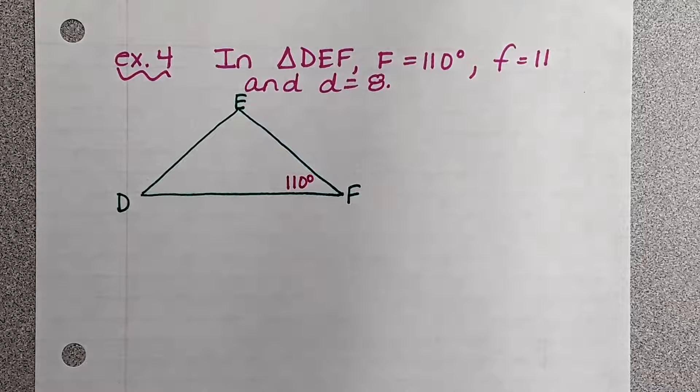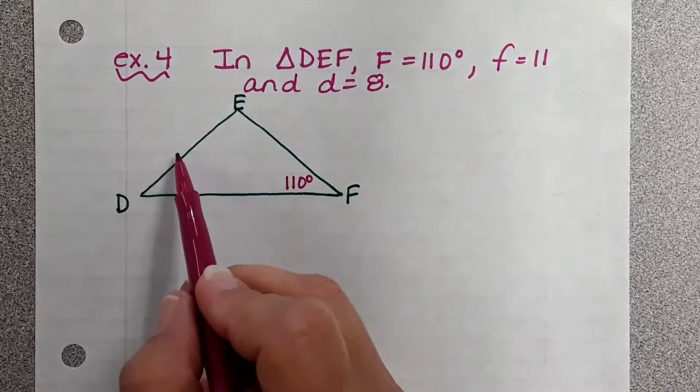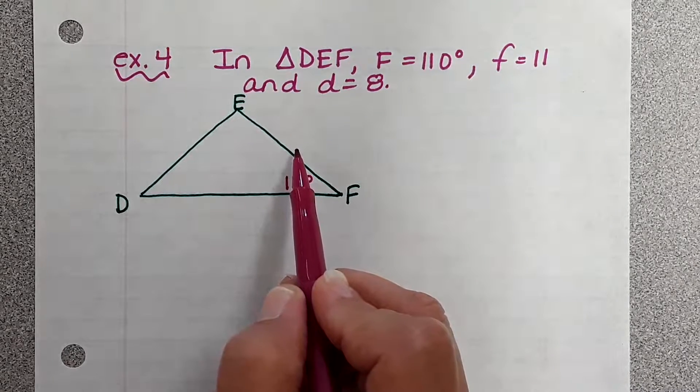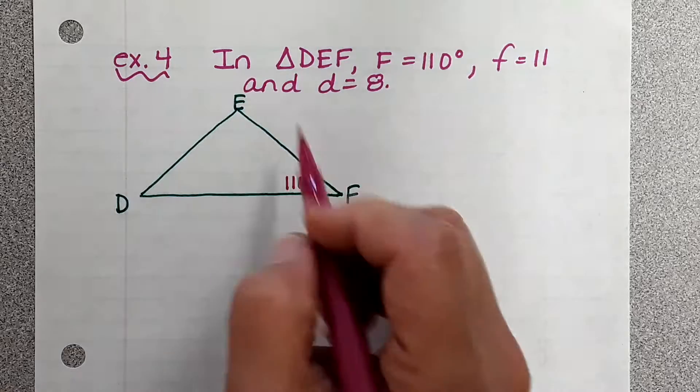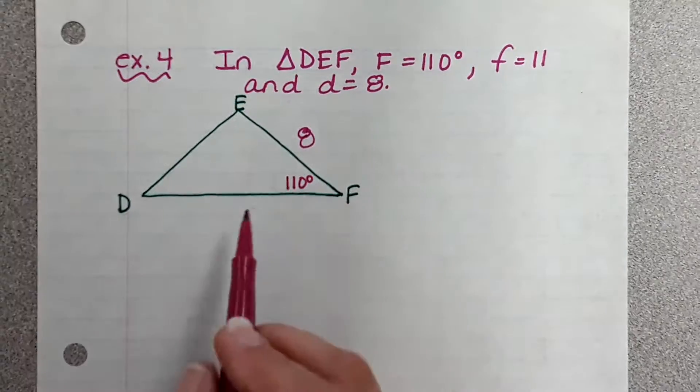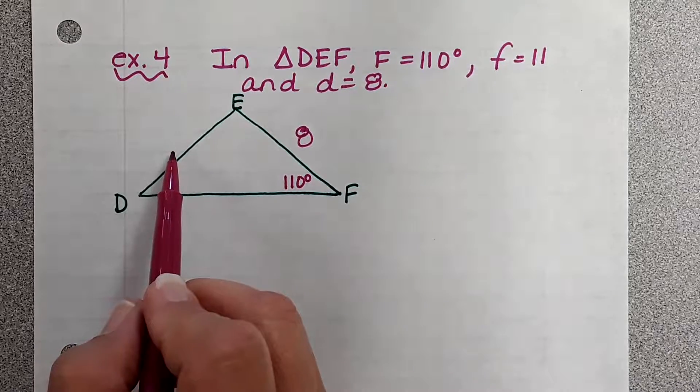Now, remember this is little f, little d, little e. So did they give us little d? What is little d? Eight. So lowercase d is eight. Did they give us lowercase e? Did they give us lowercase f?